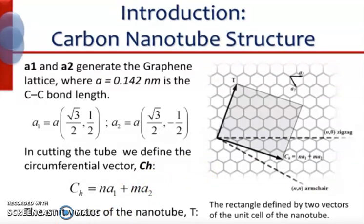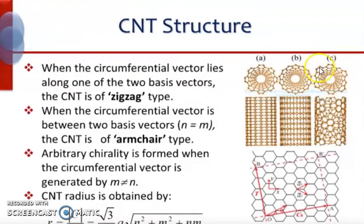The way the graphene sheet is wrapped is represented by a pair of indexes (N, M). These integers N and M denote vectors along the two directions in the honeycomb crystal lattice of graphene. If M equals 0, the nanotubes are called zigzag nanotubes. If N equals M, the nanotubes are called armchair. Otherwise, they are called chiral.